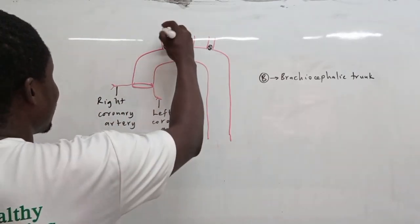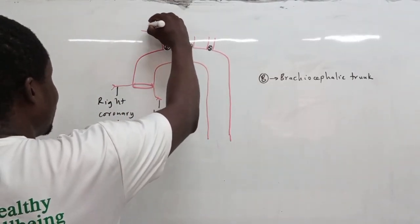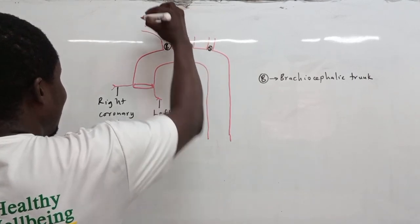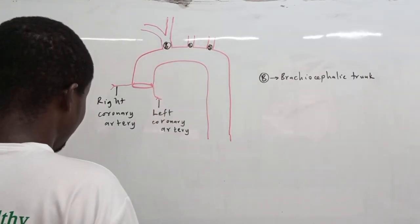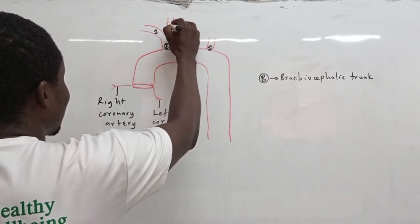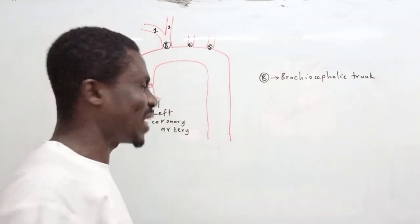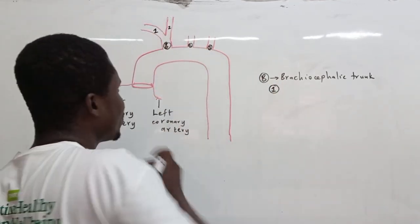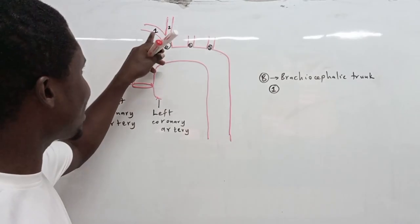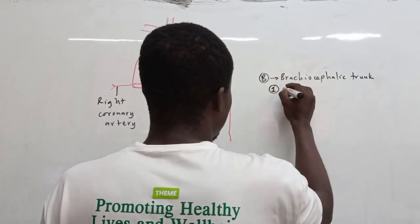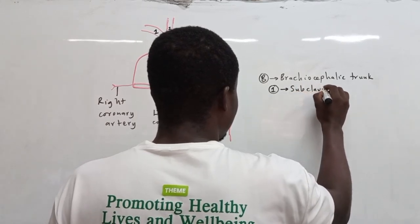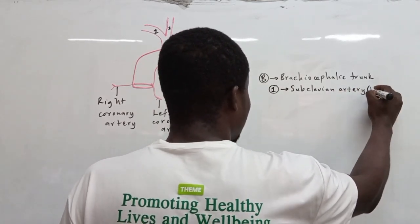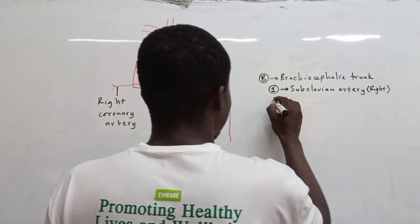The brachiocephalic trunk quickly divides into two branches. Branch number one goes toward the clavicular area — that is the subclavian artery, and precisely the right subclavian artery. Branch number two goes toward the head region — that is the common carotid artery, specifically the right common carotid artery.